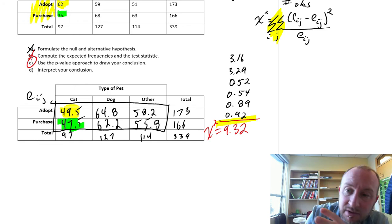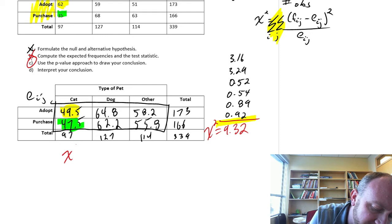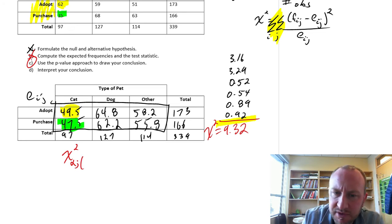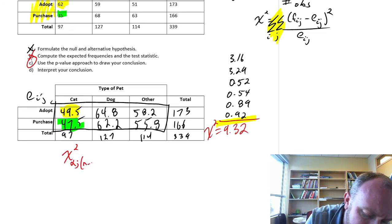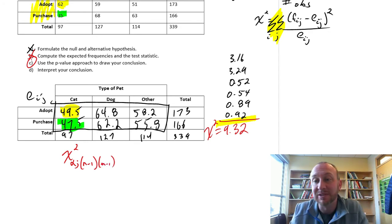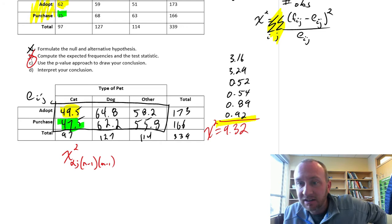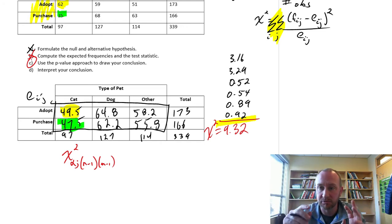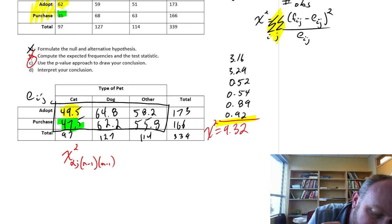If we were to look up the critical value, which we'll do that too, this will be alpha. And our degrees of freedom, different textbooks will use different notation, but it will be n minus 1 times m minus 1. So it's the number of columns minus 1 times the number of rows minus 1.